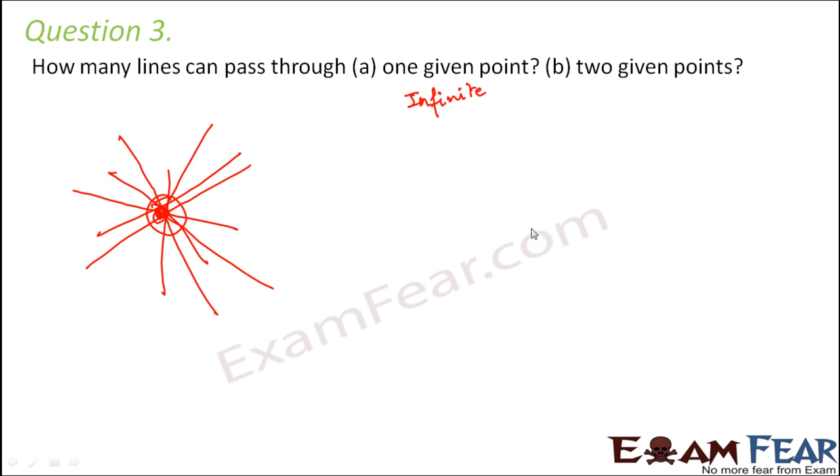Through two given points, so let's say you are given two points like this. So you have to draw a line such that the line should pass through this point as well as through this point. So how many lines can pass through these two points? Now when we say lines, we generally refer the straight lines. We do not refer curves.